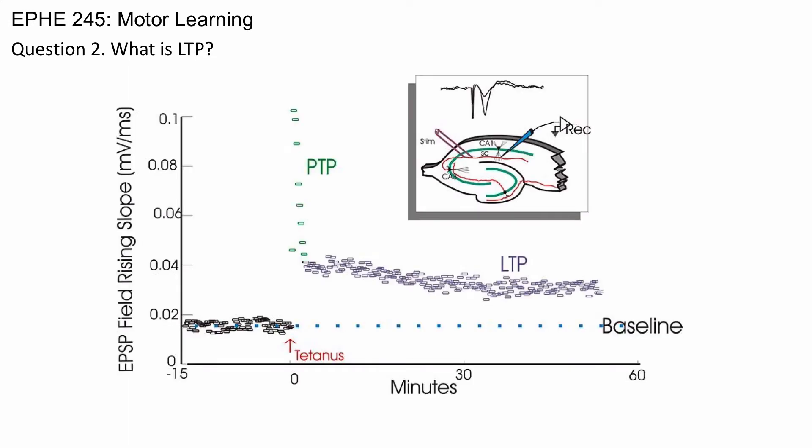You're looking at a diagram of a classic LTP study. The key thing to see is that the post-synaptic potential is at about 0.02 millivolts per millisecond, and after LTP has occurred, the post-synaptic potential is considerably higher, almost twice as high. That is long-term potentiation.